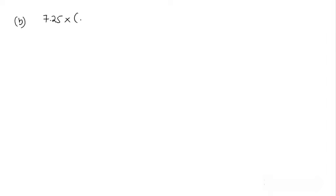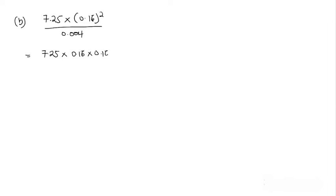Now let's look at part B. The expression in B was seven point two five multiplied by zero point one six squared, all over zero point zero zero four. We have to solve this expression without using any calculator or tables. To do that, we first rewrite the expression: zero point one six squared equals zero point one six multiplied by another zero point one six, all over zero point zero zero four.